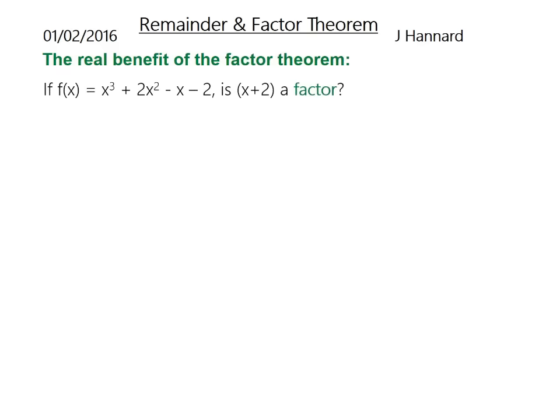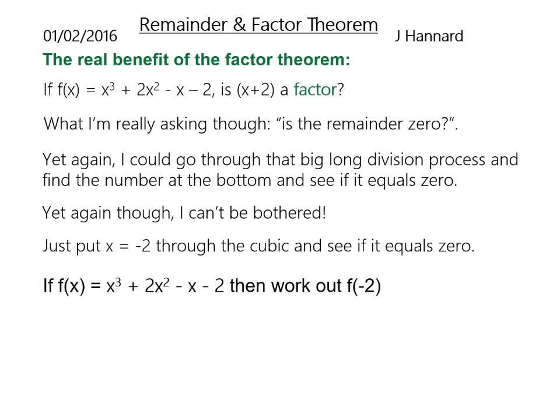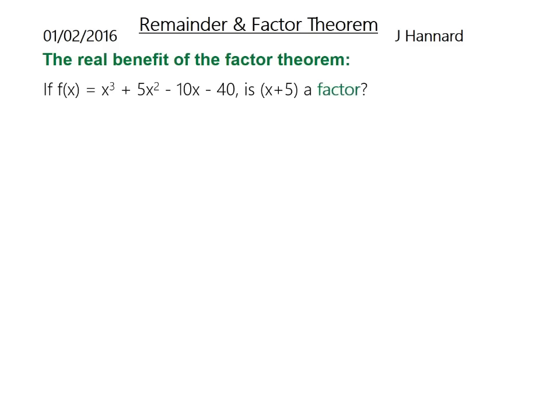So to check if something's a factor of something, you're really asking yourself, is the remainder 0? And yet again, you could go through the big long division process and find the number at the bottom and see if it equals 0. But yet again, I can't be bothered. Most people can't be bothered. So we just put -2 through and see if it equals 0. And we'll replace all the x's with a -2. So (-2)³ is -8. Plus 2 lots of (-2)², which is going to be 8. Minus -2, which is going to be plus 2, and then minus the 2. So I think that equals 0, and it does. So therefore x + 2 is a factor. You would say that to the examiner, and they need to give you a big fat tick and say well done.